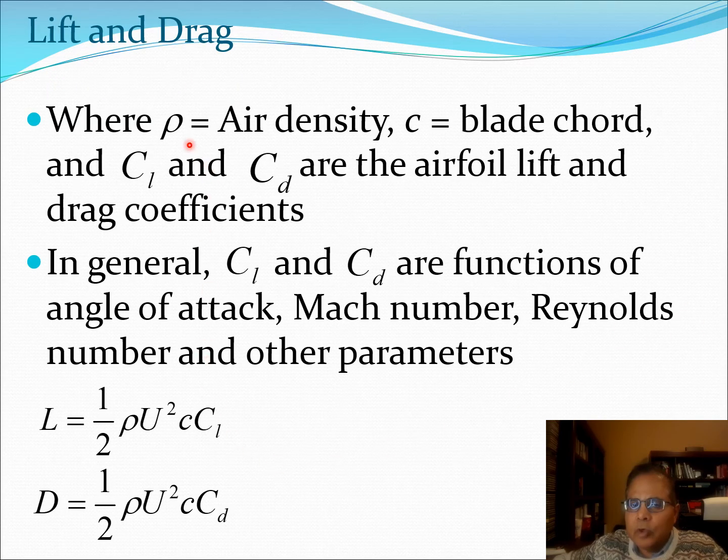Furthermore, rho is the density of air which would be 1.225 kg per meter cube. c is the blade chord. Cl and Cd are the lift and drag coefficients for the particular airfoil section we are dealing with.